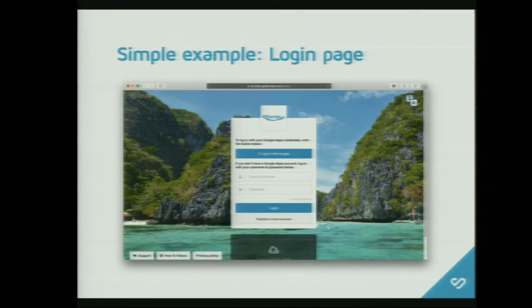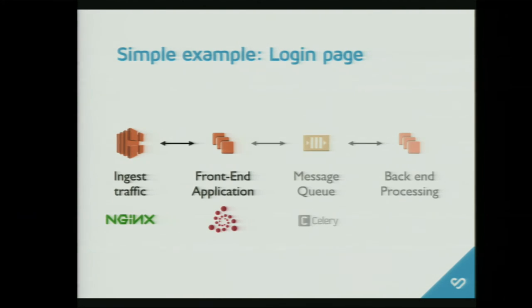To make this more tangible, here is a login page — this is our application, it's fantastically beautiful, and you can log in. You don't need a lot to generate this, so this is a very simple thing. The stack basically looks like this: you ingest traffic, you go to the front-end application, it decides it's going to render the template and give it back — done, nothing else is needed. Obviously there is some backend work, like storing your session key in the database or in Redis, but I'm just trying to keep it simple.